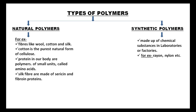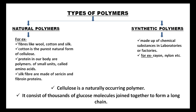A large variety of household articles is made of fibers, for example clothes, curtains, bed sheets, bags, robes, and sacks. Cellulose is a naturally occurring polymer — it consists of thousands of glucose molecules joined together to form a long chain. Natural fibers like cotton and jute are made of cellulose.